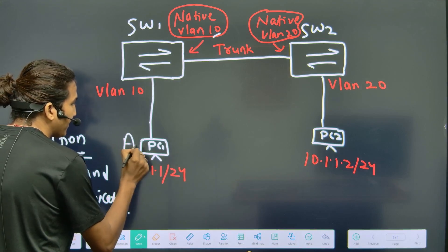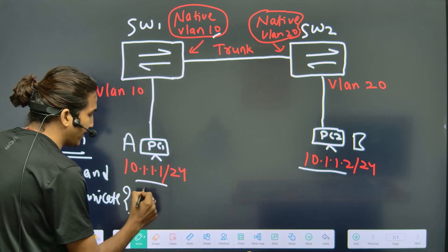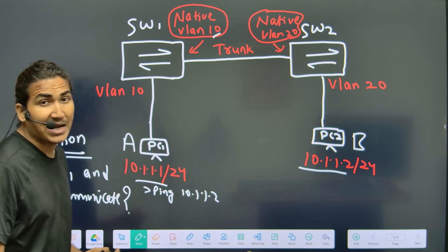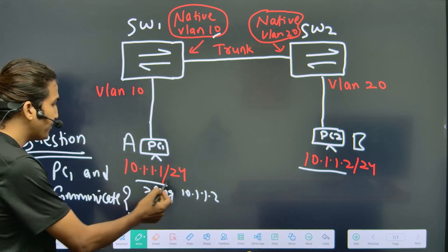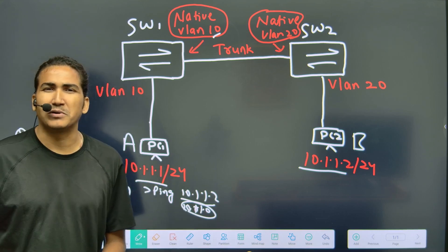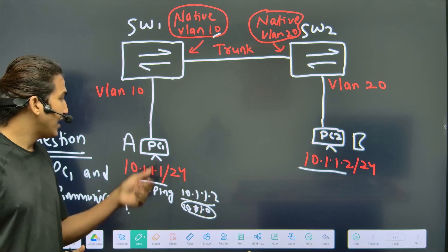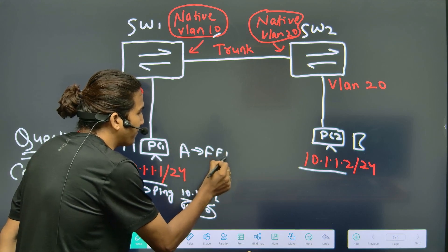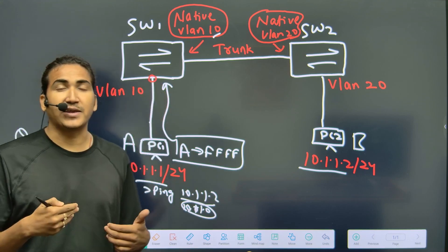PC1 is using MAC address A and PC2 is using MAC address B. When PC1 pings 10.1.1.2, it first checks whether the destination is on the same network. The network ID of 10.1.1.2 is 10.1.1.0, which matches PC1's own network ID, so the destination is on the same subnet. PC1 generates an ARP request with source MAC A and destination MAC broadcast, and forwards it to Switch 1.